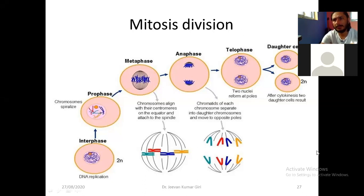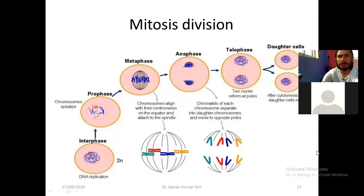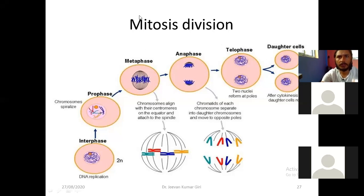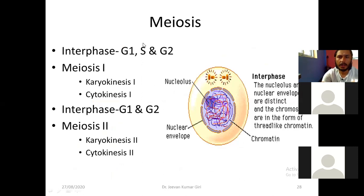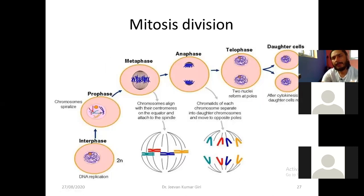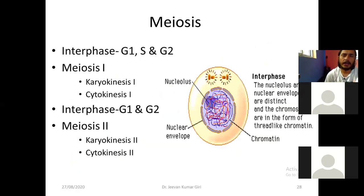What is meiotic cell division? Anyone? Division occurs in gamete cell. Yes, gamete cell. Then what will happen?